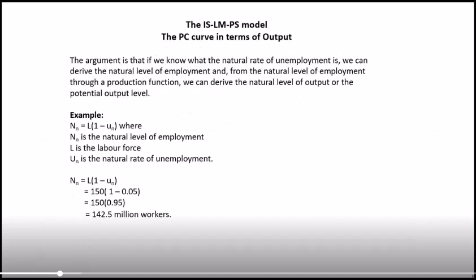Let's look at the PC curve in terms of output in the ISLM-PC model. To get to output, if we know the unemployment rate, we can get to levels of employment, and from there to levels of output via the production function. The natural level of employment N equals the labor force L times (1 minus the natural rate of unemployment U). With a labor force of 150 and a natural unemployment rate of 5% (0.05), that gives 142.5 million workers.